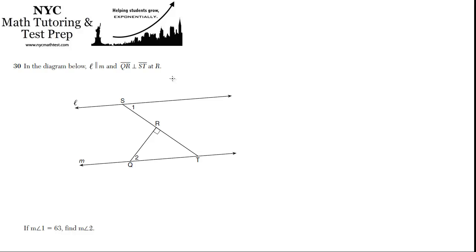30. In the diagram below, L is parallel to M, and QR is perpendicular to ST at R, and measure of angle 1 equals 63. Find measure of angle 2.